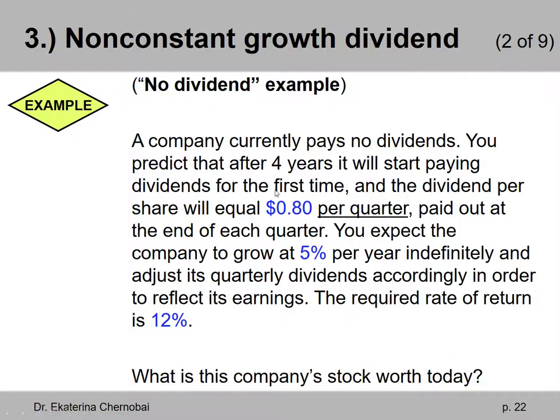So 80 cent dividend paid after four years, nothing until then, paid at the end of that first quarter. After that, it will be growing at 5% indefinitely or in perpetuity. So it's a growing perpetuity which is delayed. It's a delayed growing perpetuity, delayed by four years. There's four years of nothing.